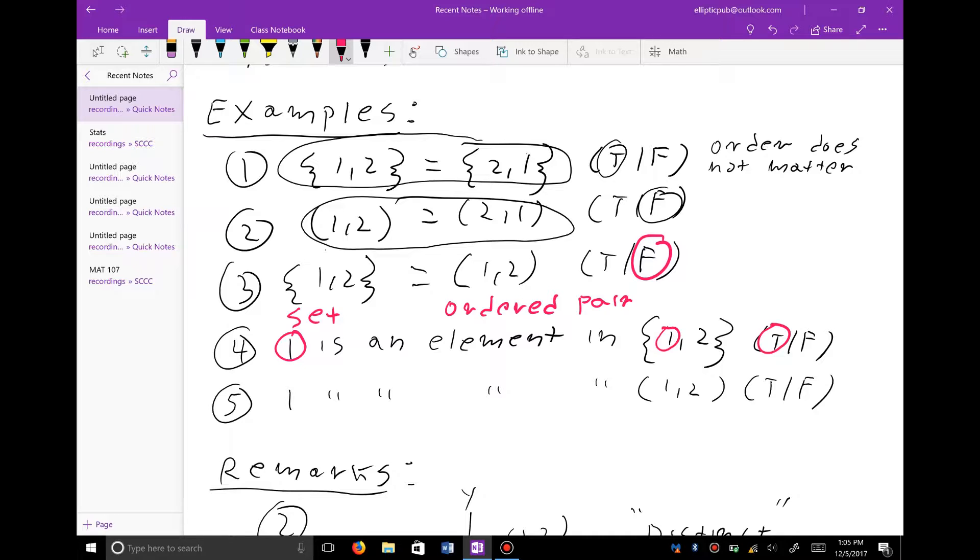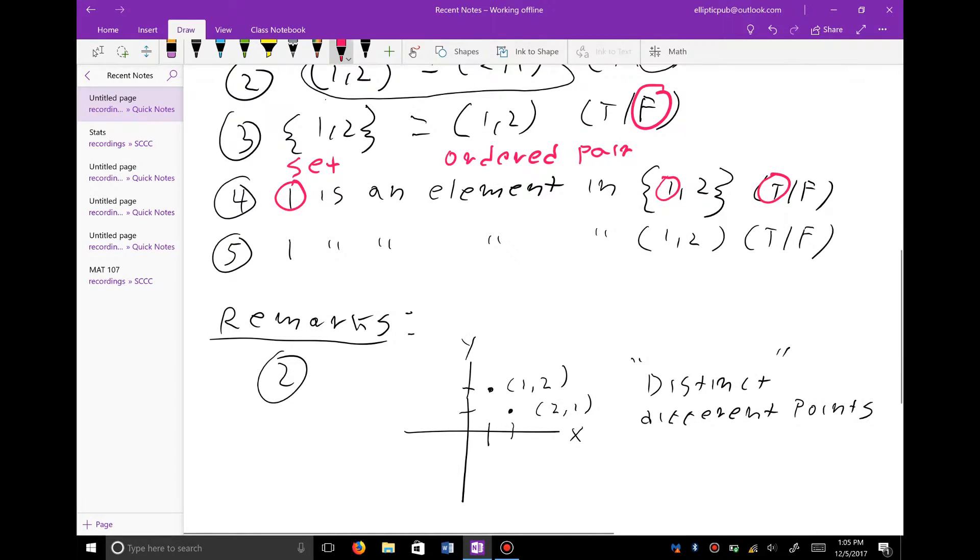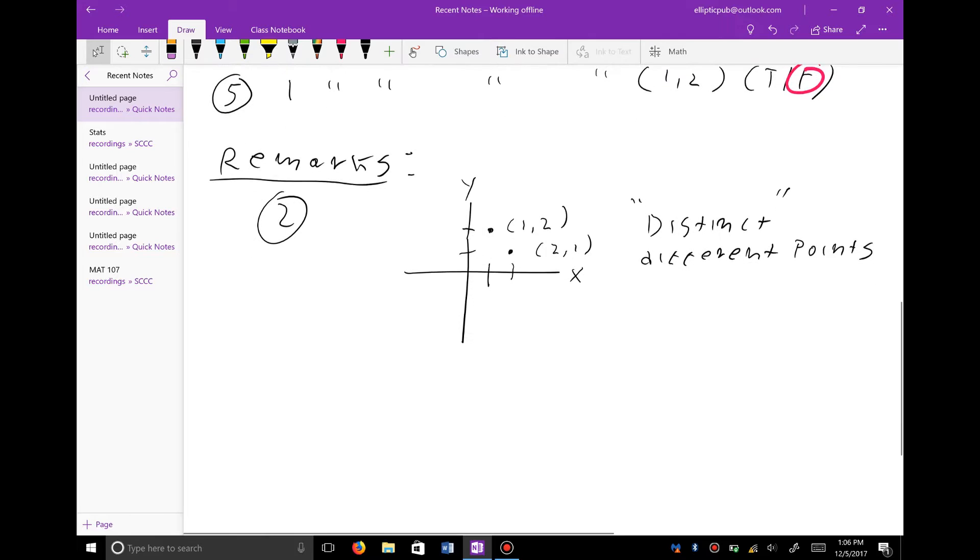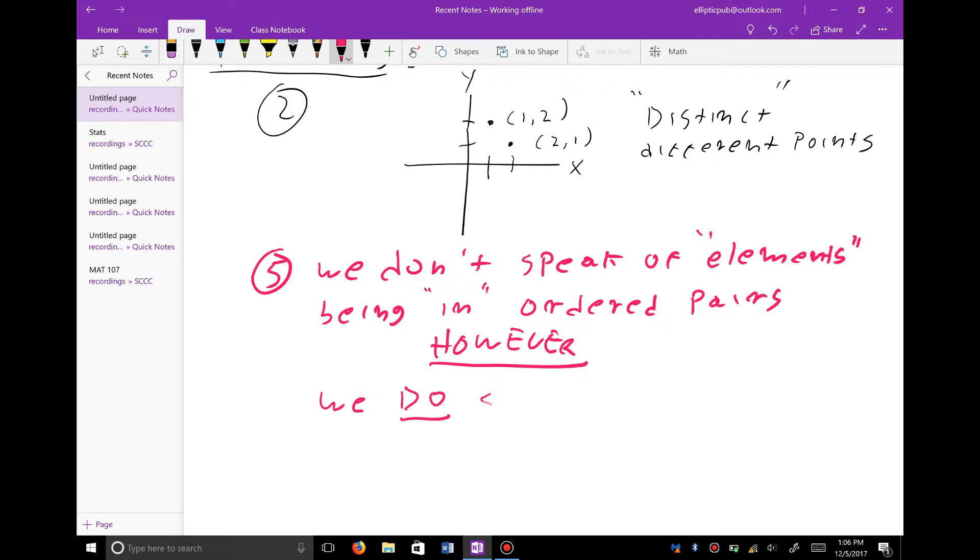But we don't speak of elements being inside an ordered pair, or an ordered triple, or an ordered, what eventually we will call an n-tuple, which has n elements that are ordered. So this is actually false. We don't speak of elements inside an ordered pair. So I want to write this down as a remark for number five. We don't speak of elements being in ordered pairs. However, we do speak of coordinates. The idea of what a coordinate is, is a very, very deep mathematical concept. And hopefully you'll have an intuitive idea of what a coordinate is. And it can be defined very precisely. But it requires a frame of reference to define this.